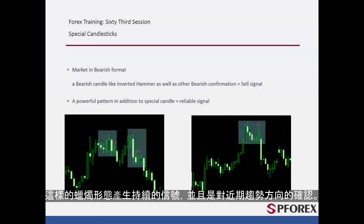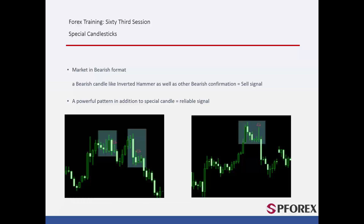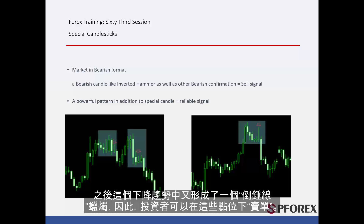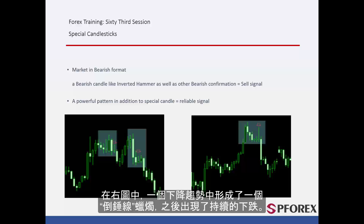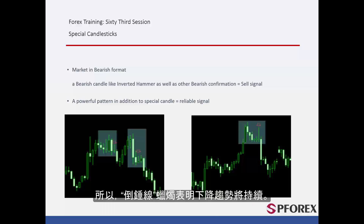These candle patterns generate continual signals and confirm the recent direction of a trend. On the left graph, an inverted hammer has formed on a downward trend, and another inverted hammer on this downtrend has formed. Thus, a trader could place a sell order on these spots. On the right graph, an inverted hammer has formed on a downward trend, followed by a continuous decline. So, inverted hammer generates continual signals on a downward trend.